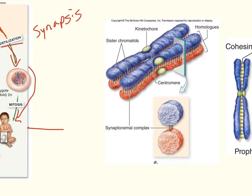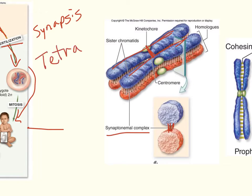Synapsis occurs during prophase I when homologs line up together and connect along their full length. Synaptonomial complexes connect the paternal homologue with the maternal homologue. Since each chromosome has made copies of itself, you have two identical sister chromatids for one homologue and two for the other, connected at the centromere — giving you four chromatids total, referred to as a tetrad (tetra meaning four).